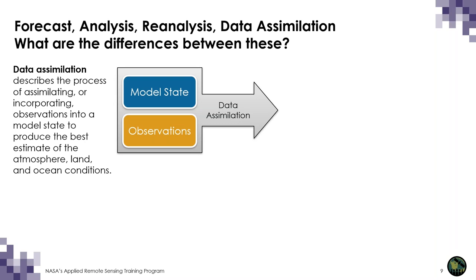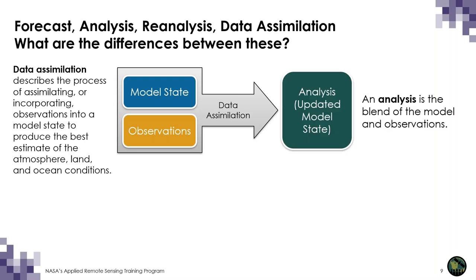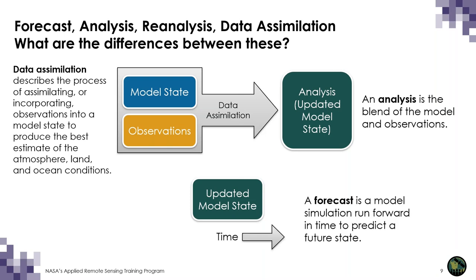Data assimilation is the process of incorporating observations into a model state to produce the best current estimate of the atmosphere, land, or ocean. This is important because when forecasting future conditions, you want to start with the best estimate of current conditions. Through the assimilation of observations, we produce an analysis — an updated model state that is a blend of the model and observations.